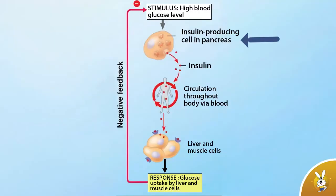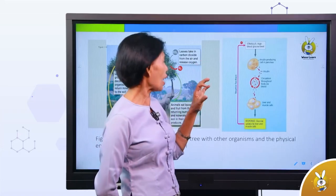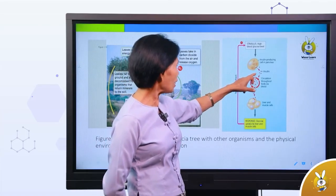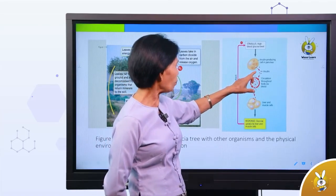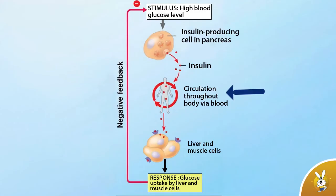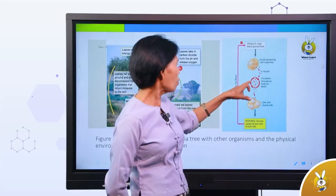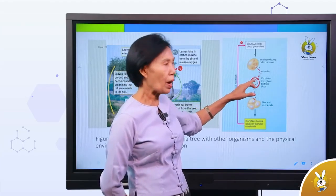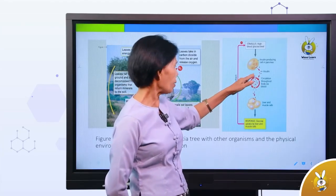The insulin-producing cells are in the pancreas. Insulin circulates throughout the body via the blood.